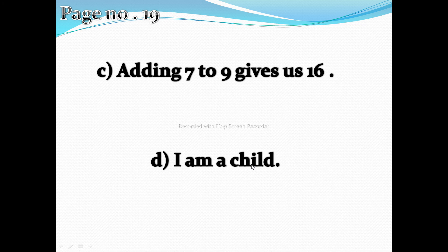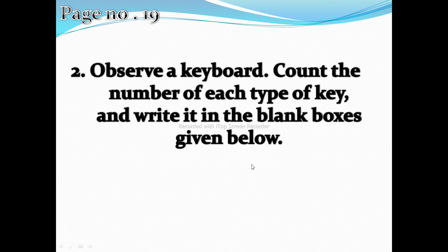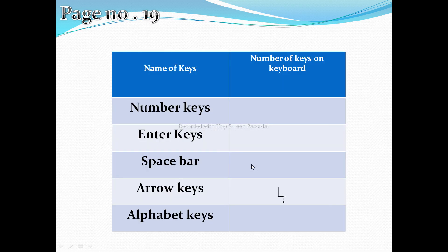First of all, children, you are requested to observe the keyboard carefully. See where alphabet keys are located, where number keys are located, and the use of enter key, delete key, backspace key, and spacebar key. After observing, you have to complete the second exercise: observe a keyboard, count the number of each type of keys, and write it in the blank box. That is also given on page 19 — count how many number keys, enter keys, spacebar keys, and arrow keys you find.